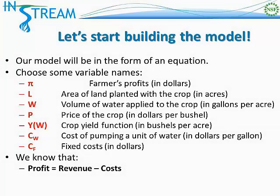So let's go right ahead. Our model is going to be in the form of an equation. In order to build an equation, we're going to have to choose some variable names for the different variables that will enter the equation. The farmer's profits we're going to represent with the variable name pi.